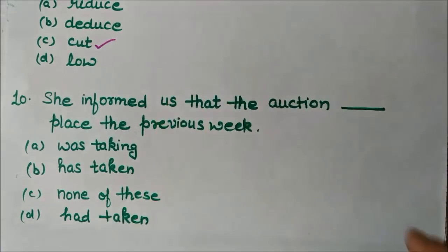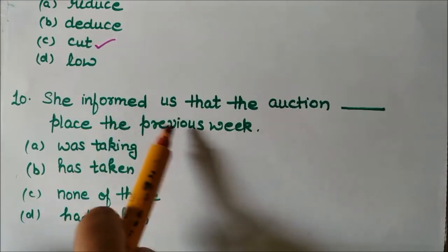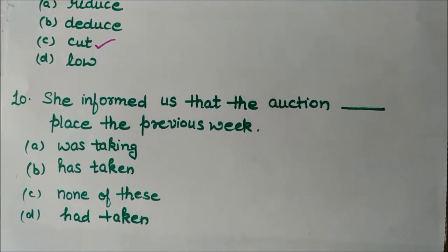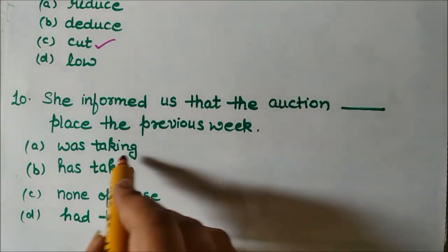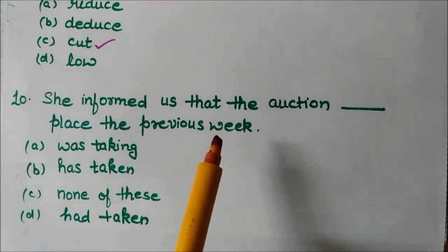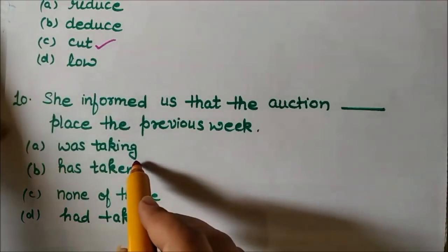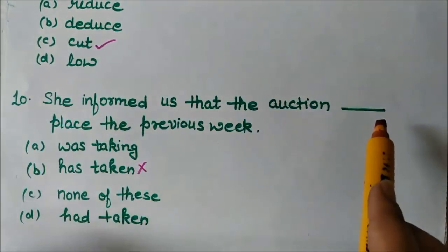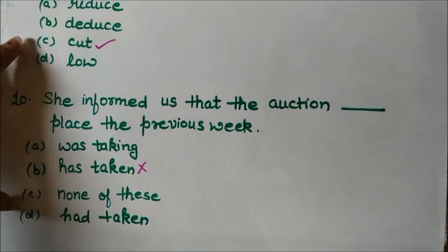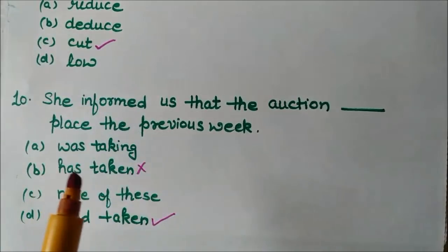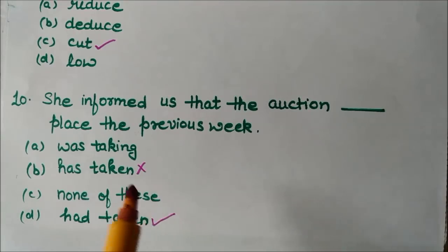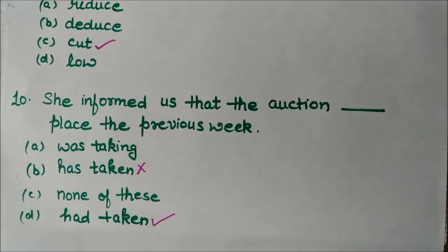Next question: 'She informed us that the auction ___ place the previous week.' The words 'informed' and 'previous week' both tell us the work is now over — it's in the past. 'Was taking' implies continuity, so it's wrong. 'Has taken' uses present perfect, but the event is clearly in the past. So we use past perfect: 'had taken place.' Answer: 'She informed us that the auction had taken place the previous week.'